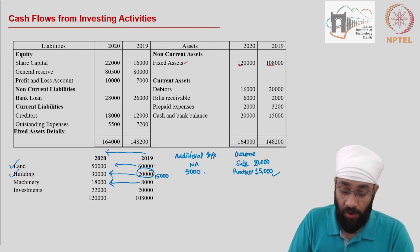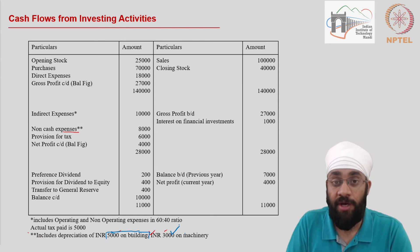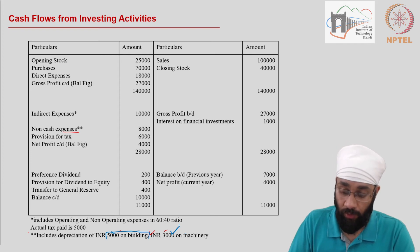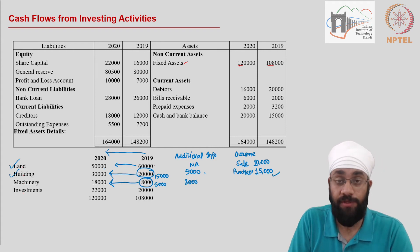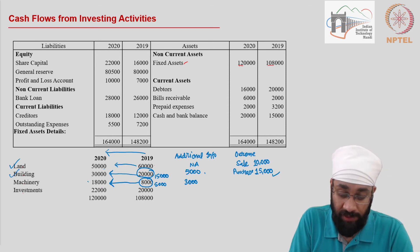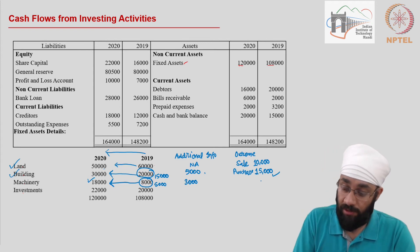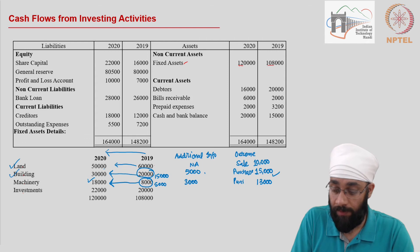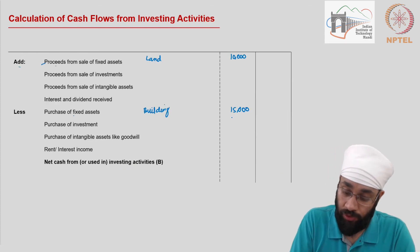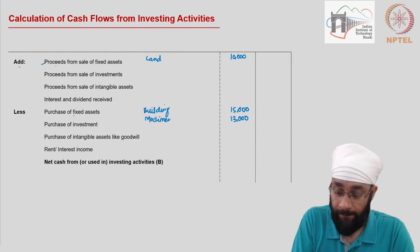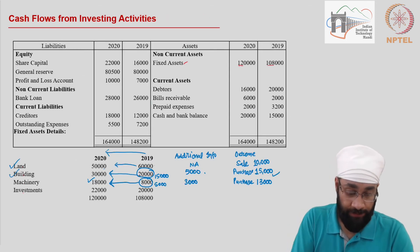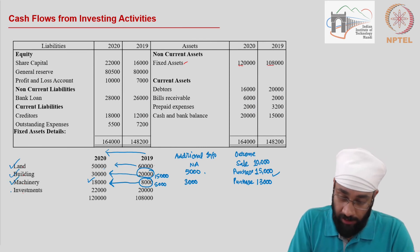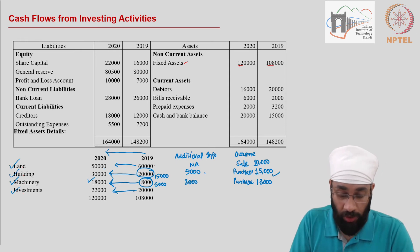A ten thousand increase could indicate a purchase of machinery during the year, however we know there was a reduction in the value of machinery due to depreciation of three thousand. This three thousand would have reduced the value of eight thousand to only five thousand. Therefore at the end of the year, if the value of machinery is eighteen thousand, that means thirteen thousand rupees worth of machinery has been purchased. I will show thirteen thousand as the purchase of machinery, an outflow. Then investments are going up by an additional two thousand.